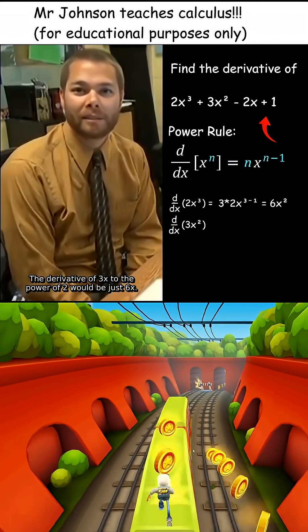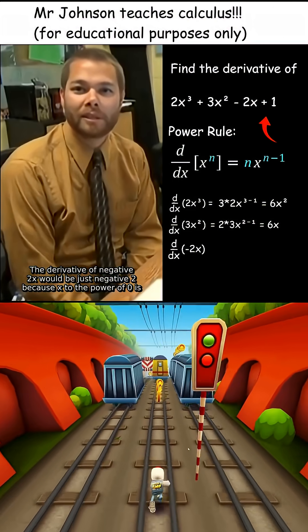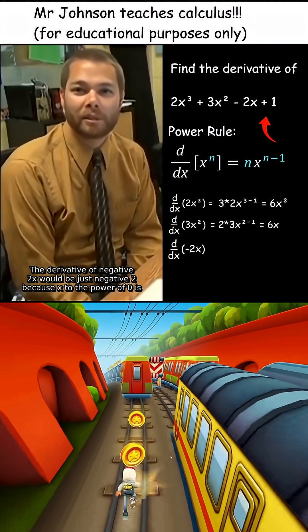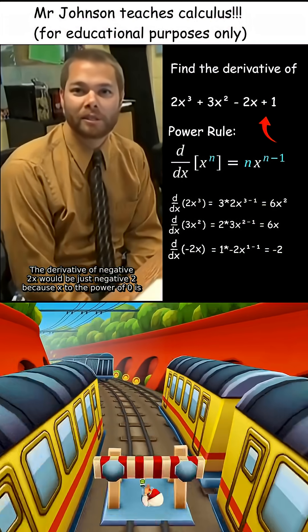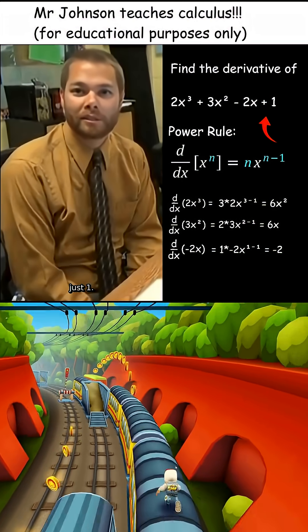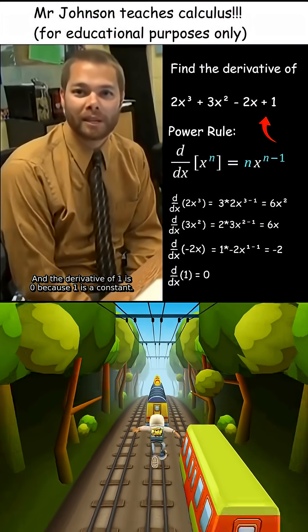The derivative of 3x² would be 6x. The derivative of -2x would be -2, because x^0 is 1. And the derivative of 1 is 0 because 1 is a constant.